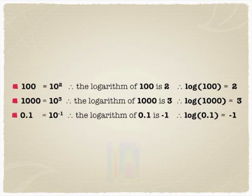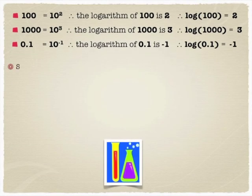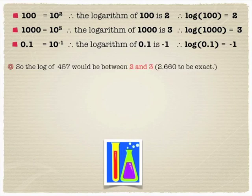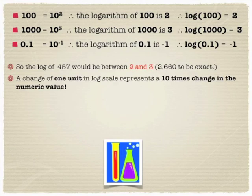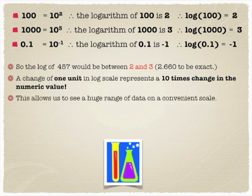So what you're seeing here is we're actually covering a gigantic scale with just a little bit of numeric space. And so what we can do then is measure things like pH and other things that cover a giant scale. For instance, 457 is in between 100 and 1,000, so the log of that would be between 2 and 3, somewhere between those two orders of magnitude. And if you do the math, it actually ends up being 2.660.